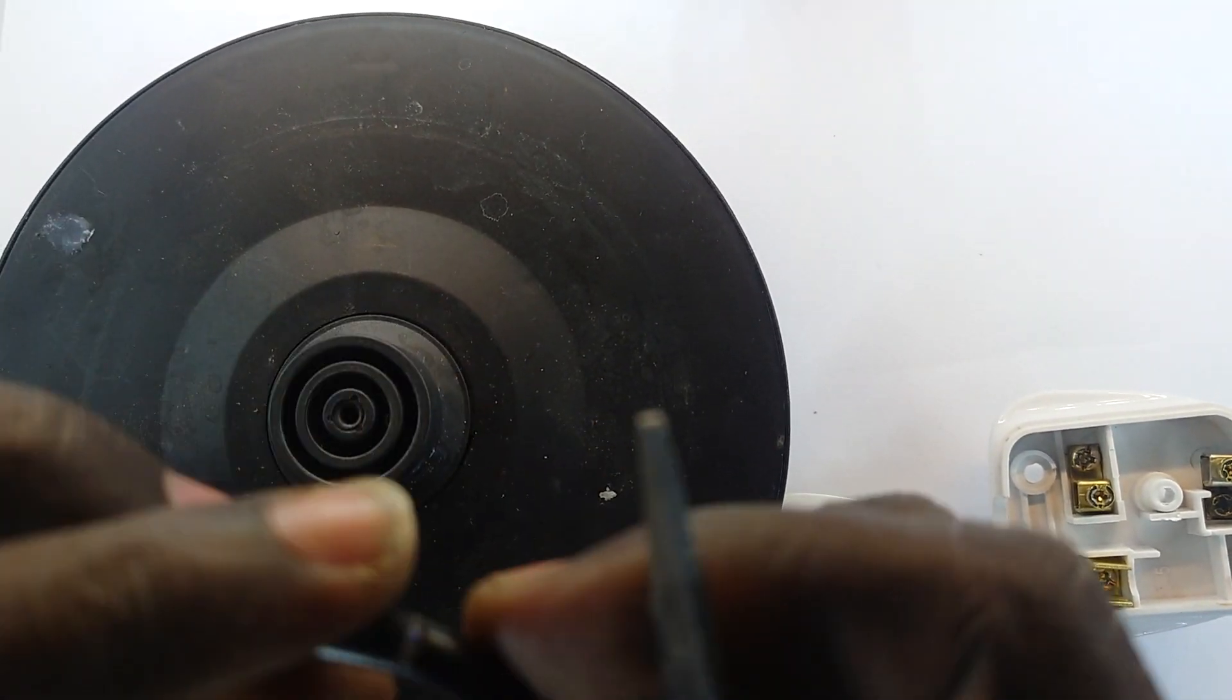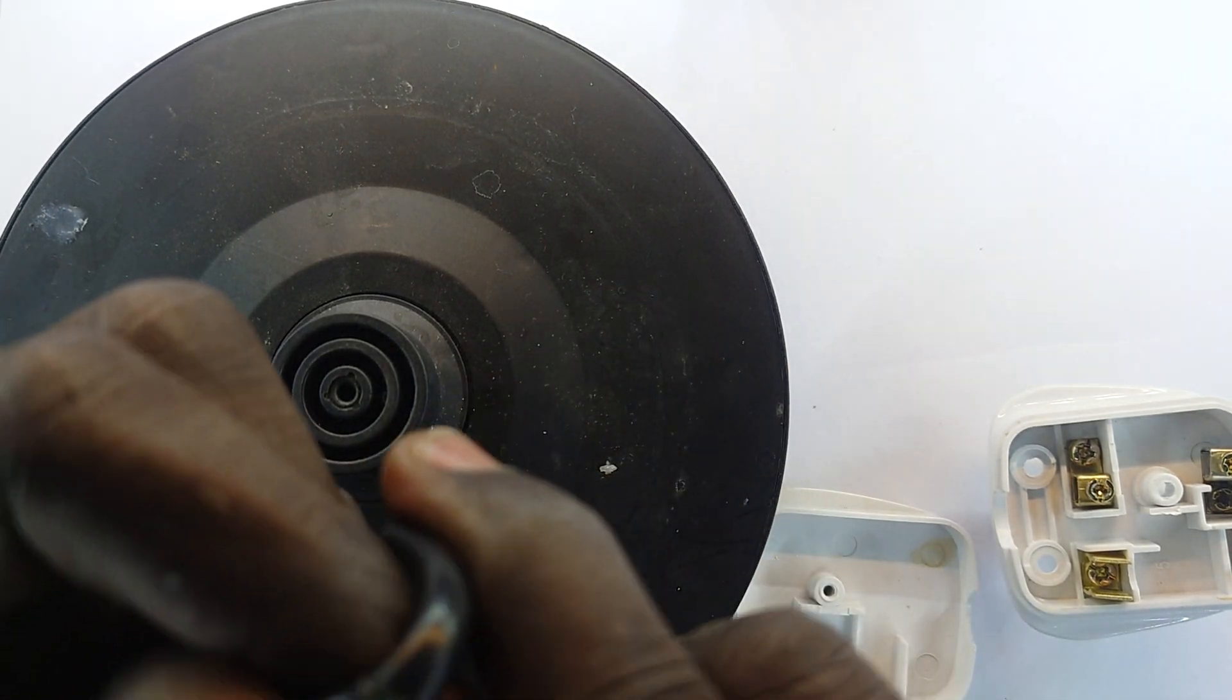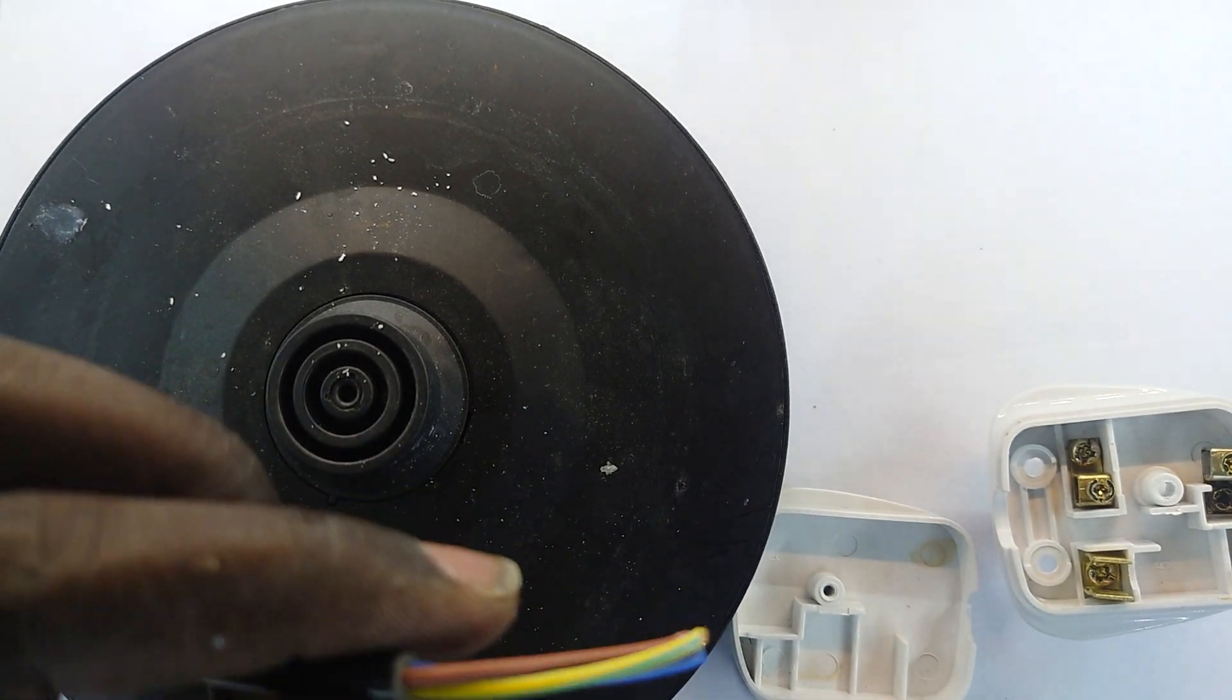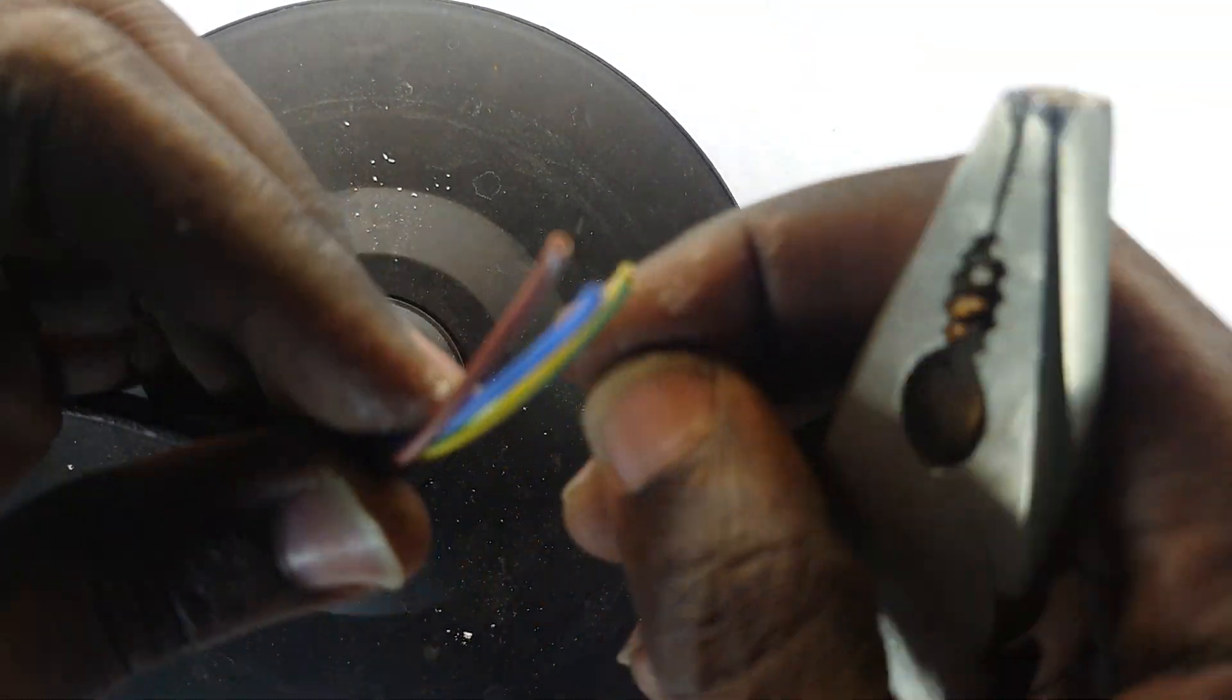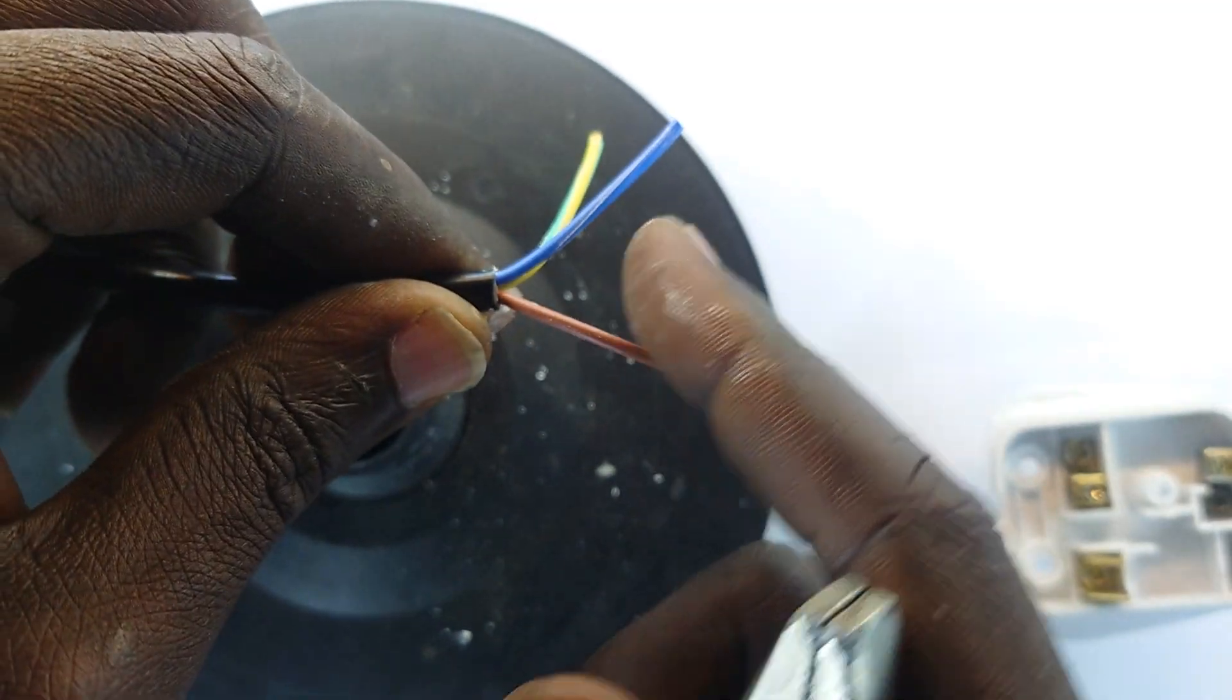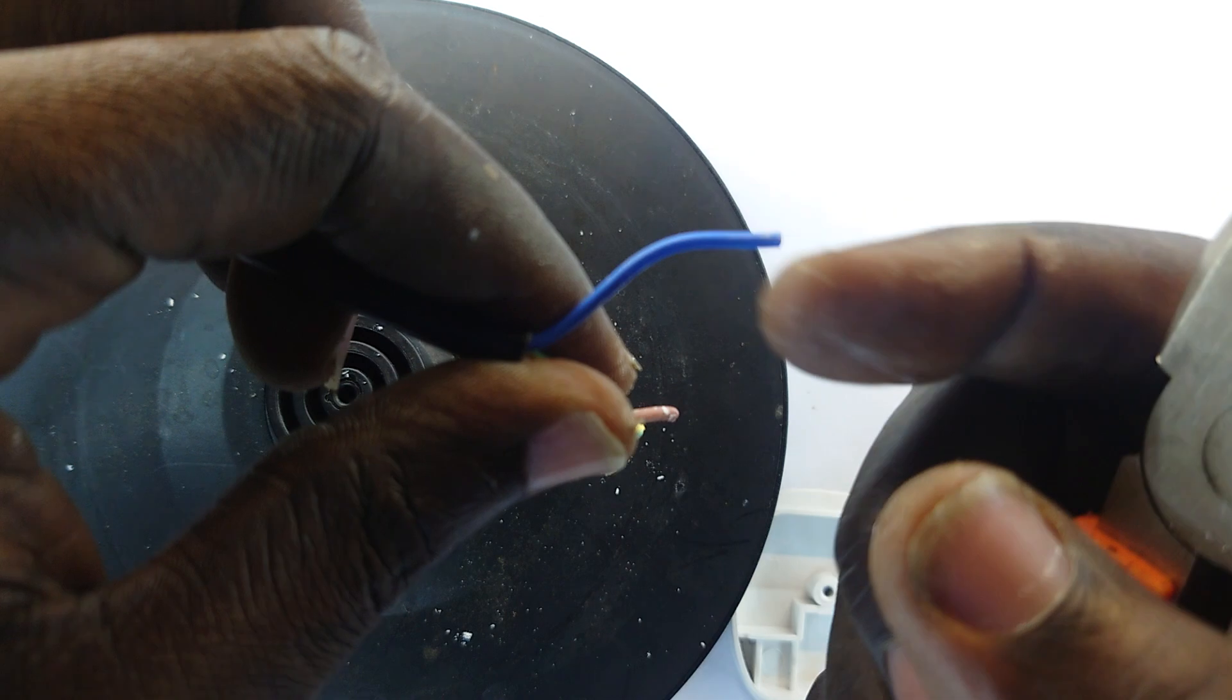These wires are color coded. The red or brown is the live wire, the blue and occasionally black is the neutral wire. Now I'm going to trim off a length.